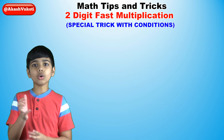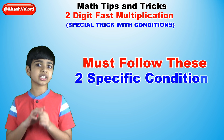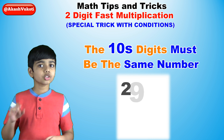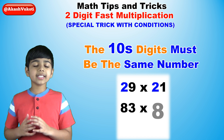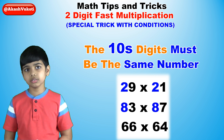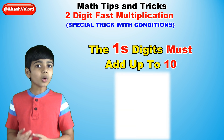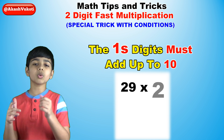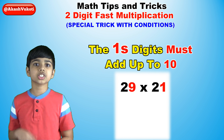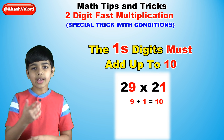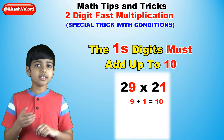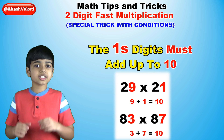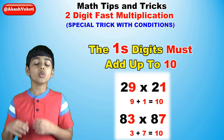So this trick will work, but only if the numbers meet these two specific conditions. The tens digit must be the same number — for example, 29 and 21 share a 2, 83 and 87 share an 8, 66 and 64 share a 6. And the ones digits must add up to 10 — so 29 and 21: 9 plus 1 is 10. And 83 and 87: 3 plus 7 is 10. If these conditions are met, then this math trick will work perfectly.